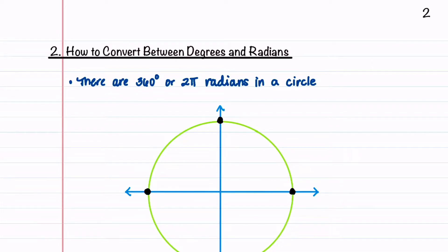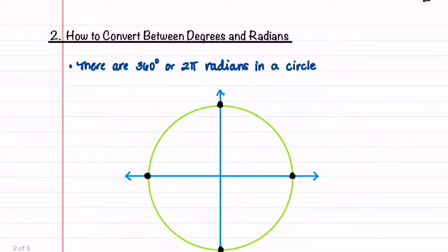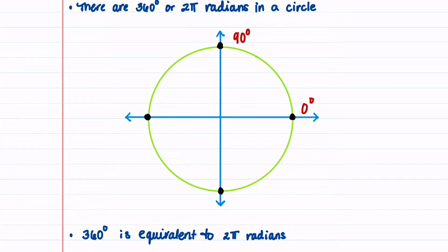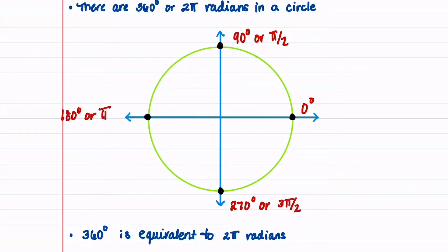We're now going to learn how to convert between degrees and radians. Let's begin by recalling that there are 360 degrees or 2 pi radians in a circle. Our first point on the right-hand side is 0 degrees. At the top is 90 degrees or pi over 2. On the left-hand side, we have 180 degrees or pi radians. At the bottom, we have 270 degrees or 3 pi over 2 radians. And the right-hand side can again be called 360 degrees or 2 pi radians.